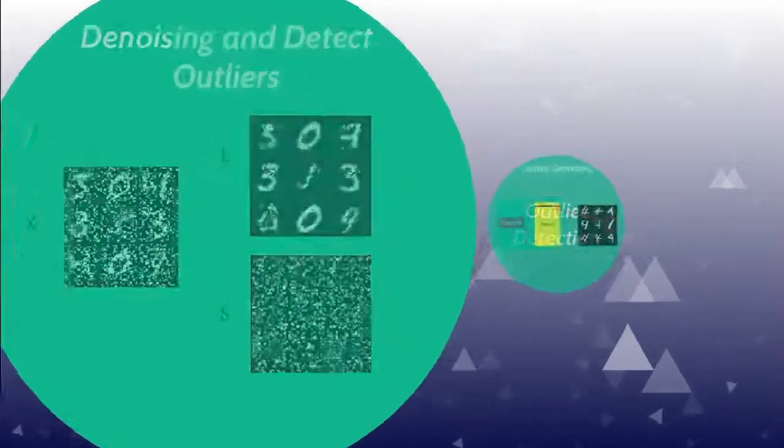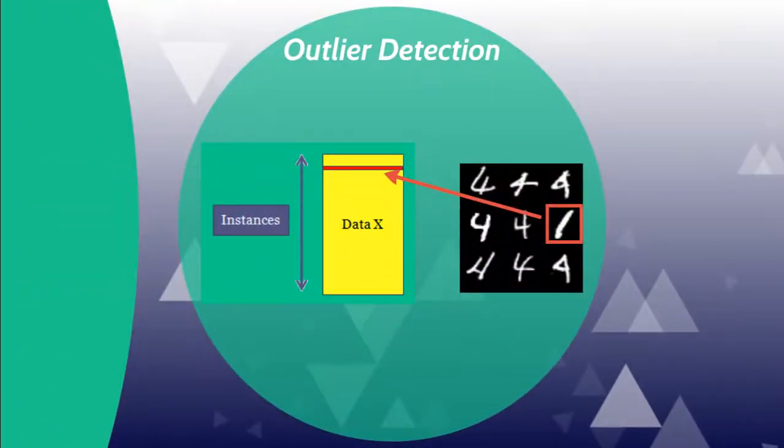For outlier detection task, we assume each row in a matrix of training data is an instance. If a particular instance is an anomaly, the entire row should be difficult to reconstruct and need to be isolated into S. By applying a group norm on S, we could detect outliers.